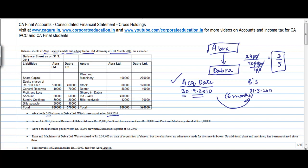As on 1-4-2010, general reserve of Dabra Limited was 35,000. Profit and loss was 30,000 and plant and machinery stood at 3 lakh. Okay, let me just start jotting down this information.